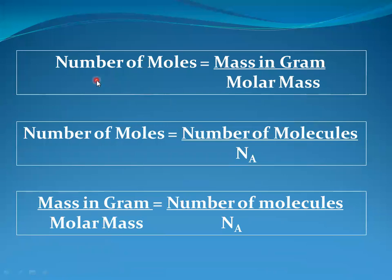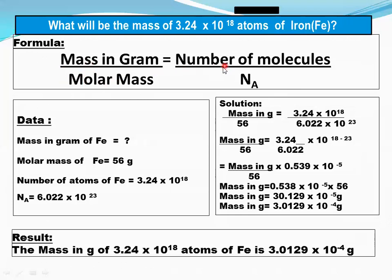Arrange the formula: number of moles equals mass in grams divided by molar mass; number of moles also equals number of molecules divided by Avogadro constant. Merging gives: mass in grams divided by molar mass equals number of atoms divided by Avogadro constant. Arrange the data: mass in grams of iron — to be calculated; molar mass of iron = 56 grams; number of atoms of iron given in the question = 3.2 × 10¹⁸ atoms; Avogadro constant = 6.022 × 10²³.